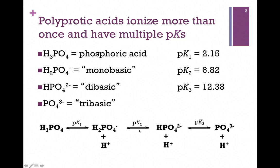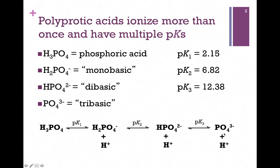As pH increases to pK2, which is 6.82, then half is in the monobasic and half in the dibasic form. In this pair, our acid form is H2PO4⁻ and its conjugate base is HPO4²⁻. As we start to increase the pH above pK2, we are beginning to donate that third proton. And as the pH reaches pK3, that is 12.38, it's half in the dibasic form and half in the tribasic form. In this pair, our acid would be HPO4²⁻ and its conjugate base is PO4³⁻.